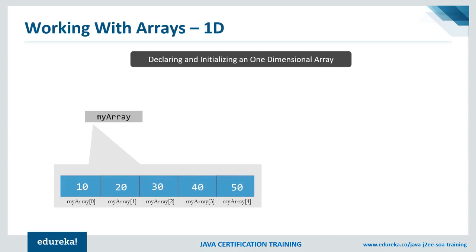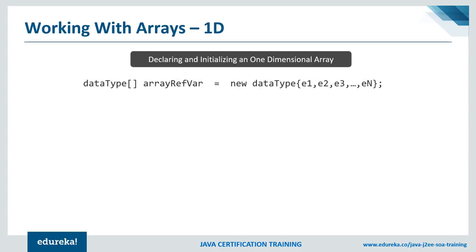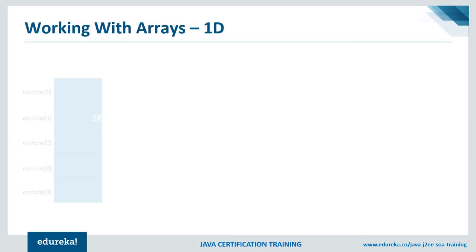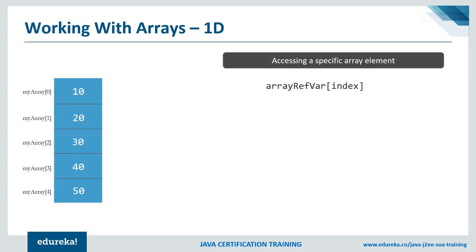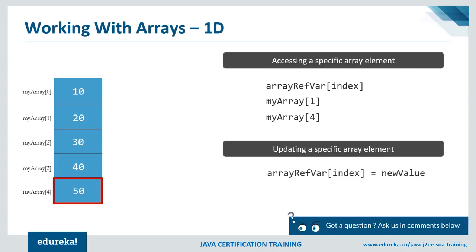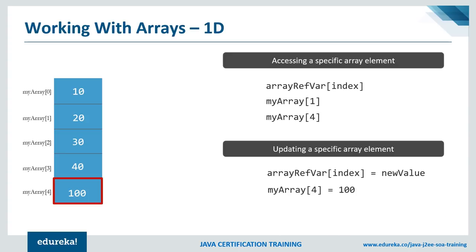You can also specify values at the time of construction, in which case you don't need to write the data separately — the values come in by default. To access any element, write the reference variable name with the index in square brackets. For example, myArray[1] accesses the value 20, and myArray[4] accesses 50. To update, just mention the index and assign a new value — for example, myArray[4] = 100 replaces the value at index four with 100.